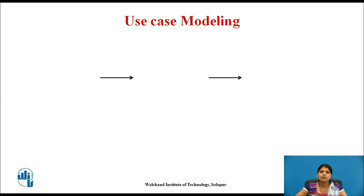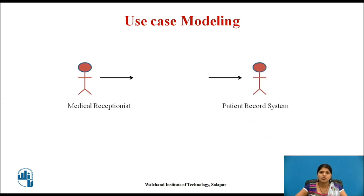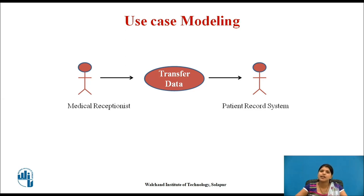Continuing with use case modeling, it involves two actors: the medical receptionist and the patient record system. In its simplest form, a use case is shown as an ellipse with the actors. Use informally to indicate that the medical receptionist initiates the transaction and data is transferred to the patient record system. Each use case represents a discrete task that involves external interaction with the system.